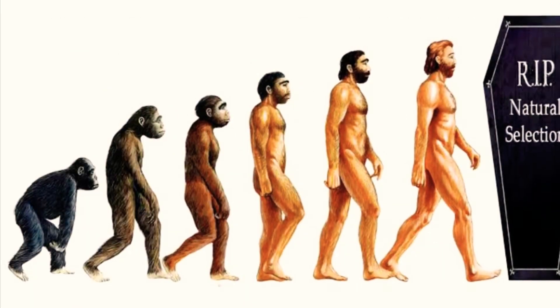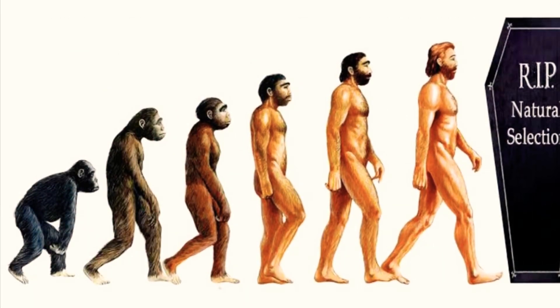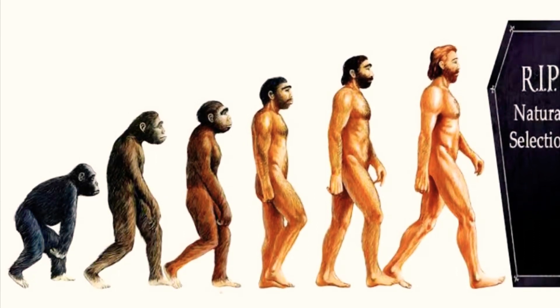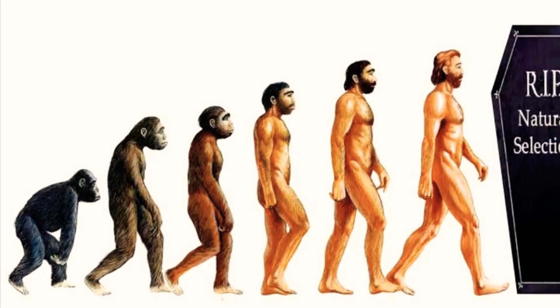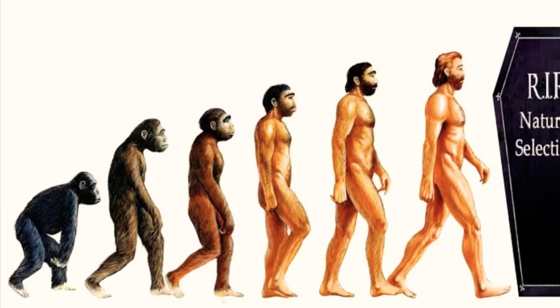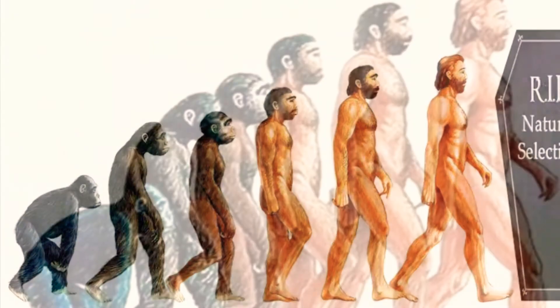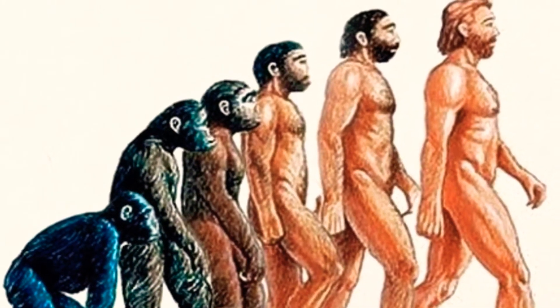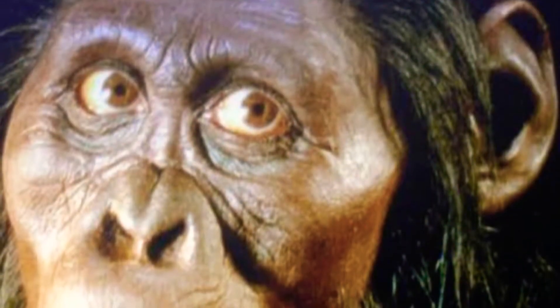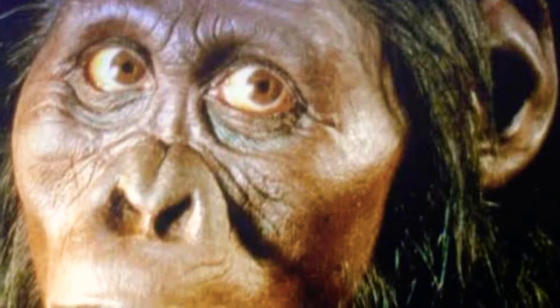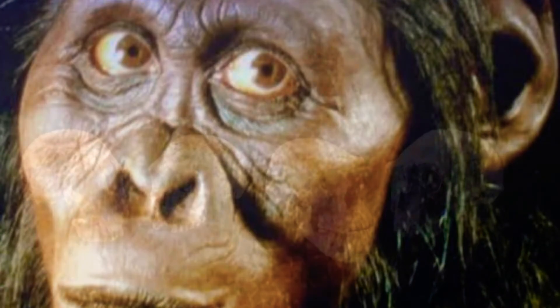Human evolution is the evolutionary process that led to the emergence of anatomically modern humans, beginning with the evolutionary history of primates, in particular genus Homo, and leading to the emergence of Homo sapiens as a distinct species of hominid family, the great apes. This process involved the gradual development of traits such as human bipedalism and language, as well as interbreeding with other hominins, which indicates that human evolution was not linear.